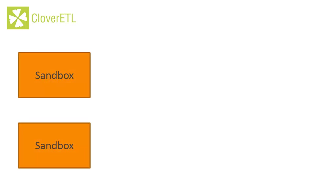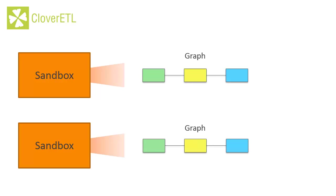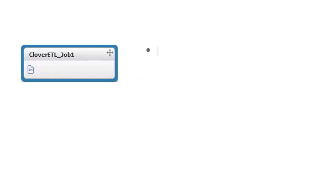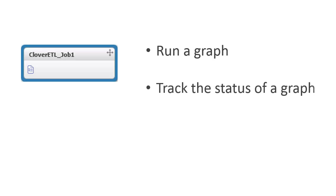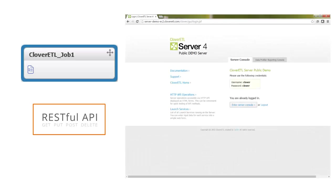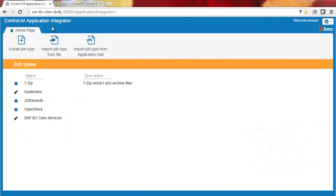Clover ETL uses environments or containers called sandboxes, and sandboxes contain workflows or data flows called graphs. Graphs are run on user-selected nodes. We want the Clover ETL job type to run a graph, track the status of a graph, and stop a graph from running. To create the job type, we'll use REST API requests and work with the Clover ETL demo server on Amazon. Let's begin.